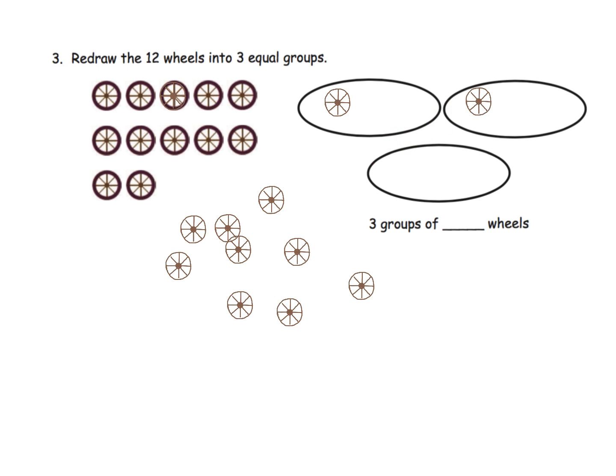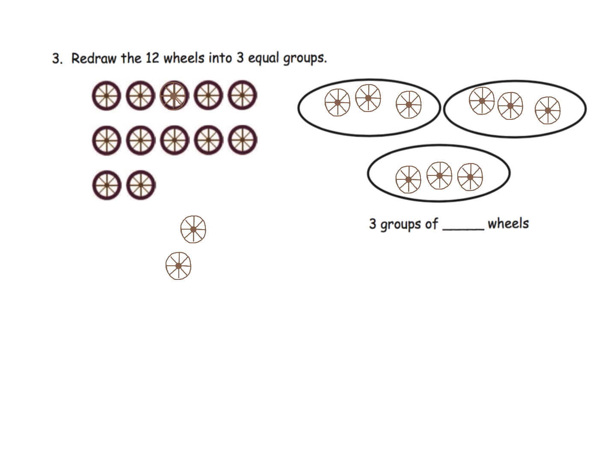So we're going to go one, two, three, one, two, three, one, two, three, one—I left one over there—two, three. So there are my 12 wheels that are now sorted into three equal groups.